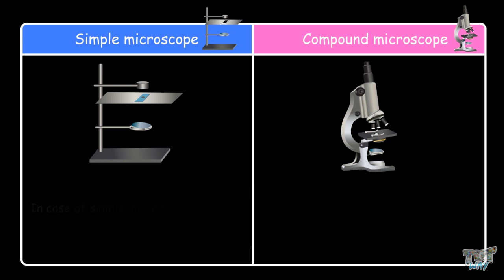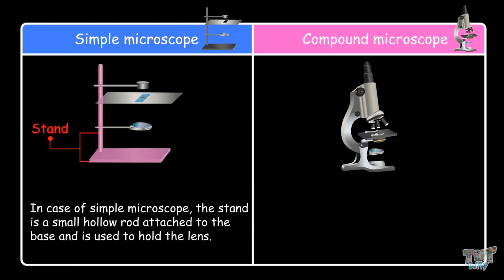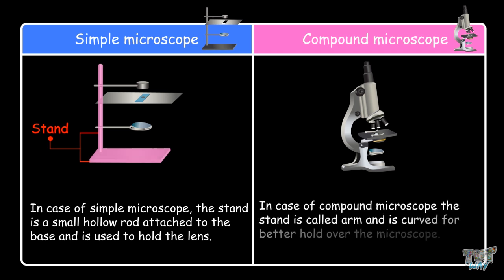For a simple microscope, the stand is a small hollow rod attached to the base and it is used to hold the lens. In the case of a compound microscope, the stand is called an arm. This is curved for better hold over the microscope.